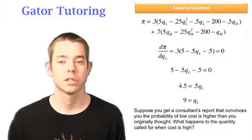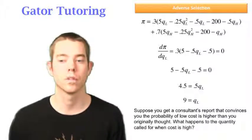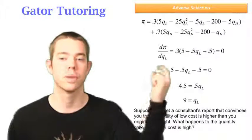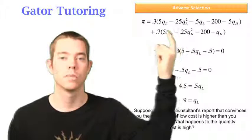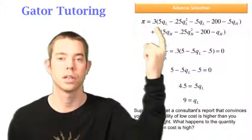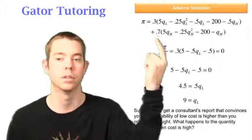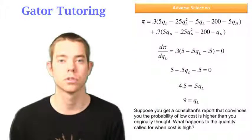The last question says, suppose you get a consultant's report that convinces you the probability of low cost is higher than you originally thought. What happens to the quantity called for when cost is high? So real fast, just imagine this profit function. Imagine that this .3 was really a .9, and this would then therefore be a .1. What would happen to QH if that happened?